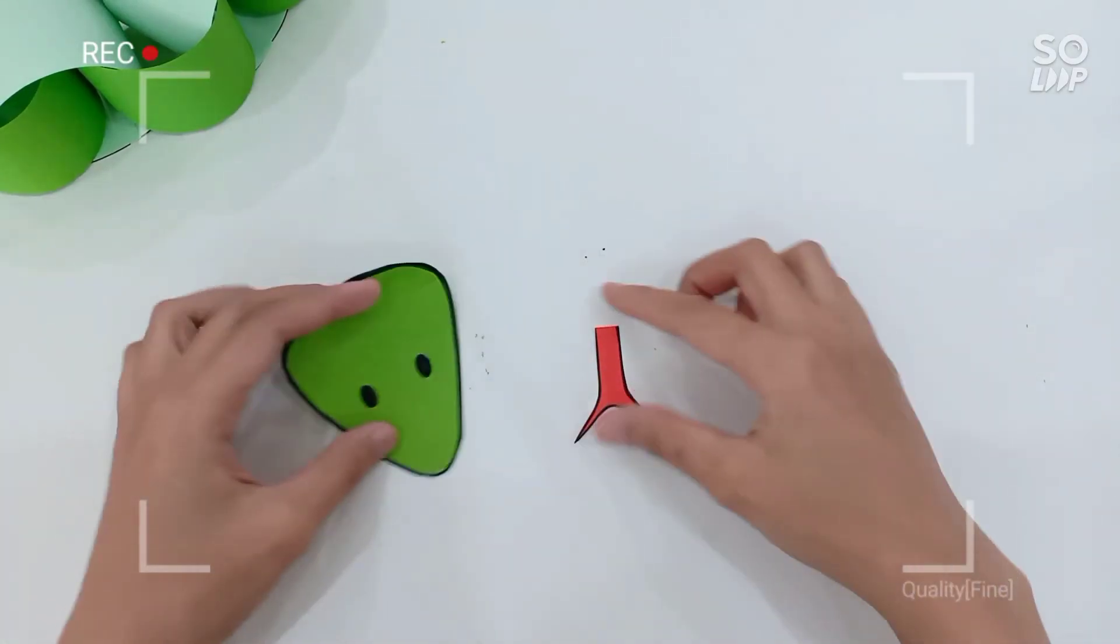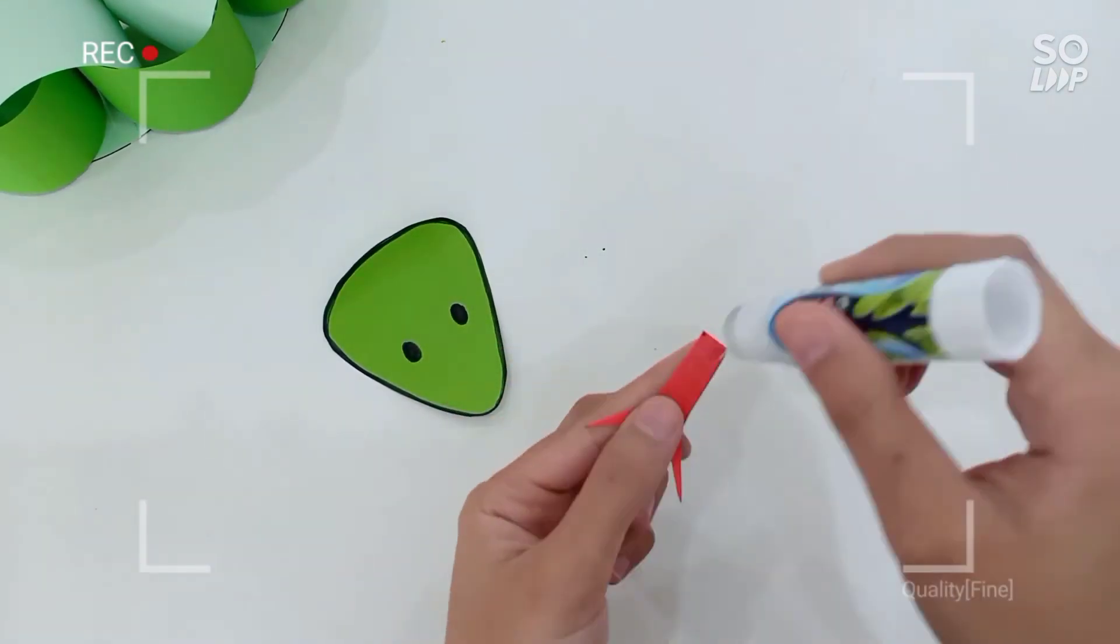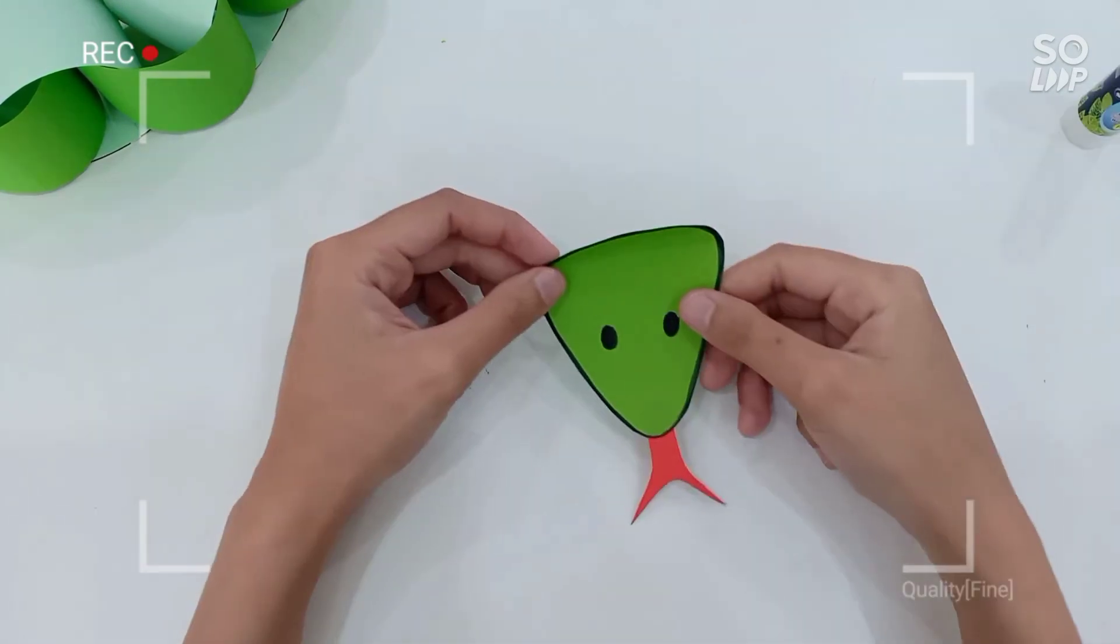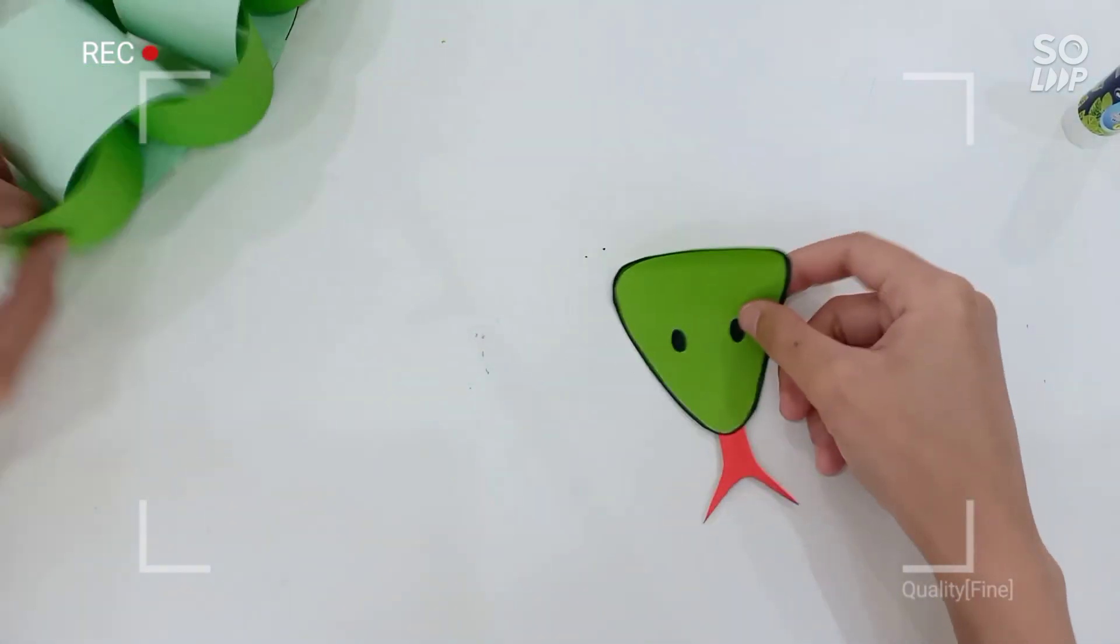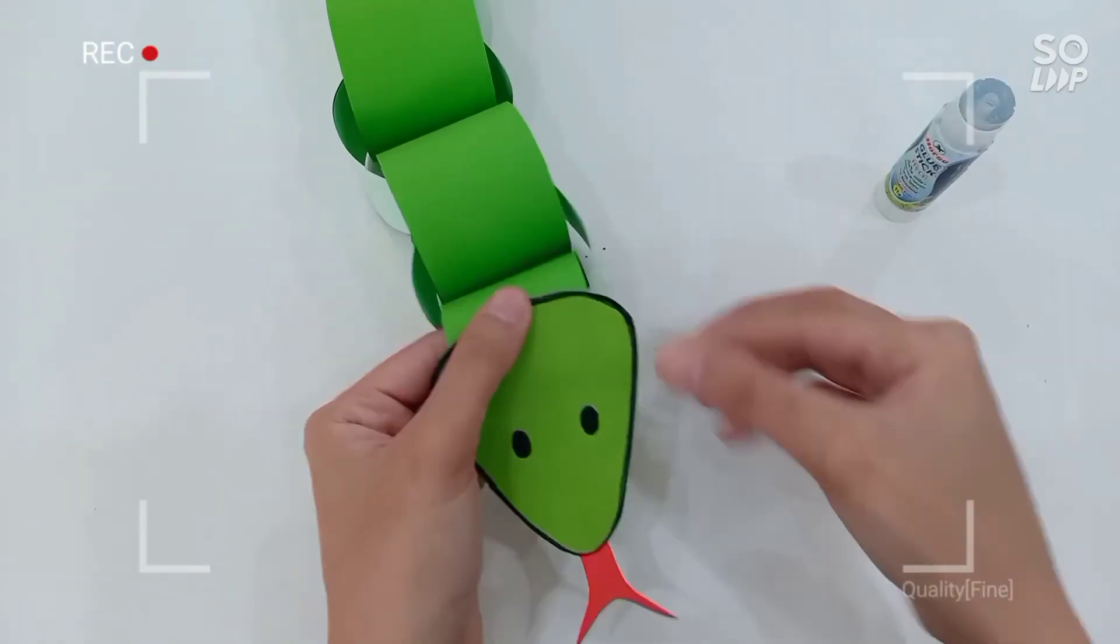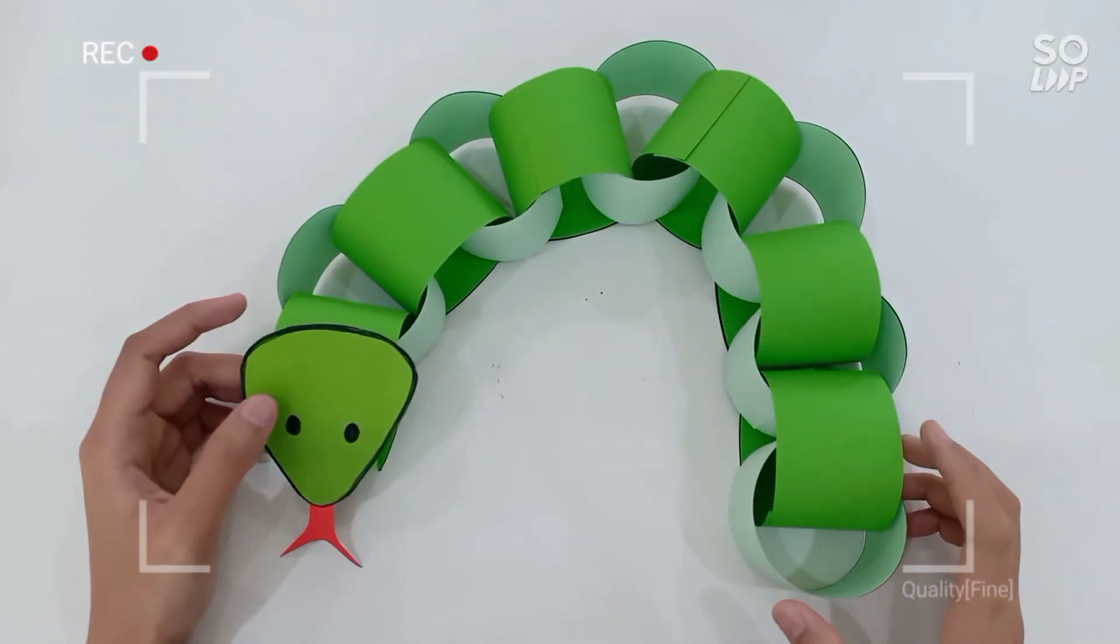Then just glue it right underneath the head. All right, let's get our head on now. There we have it, our paper chain snake.